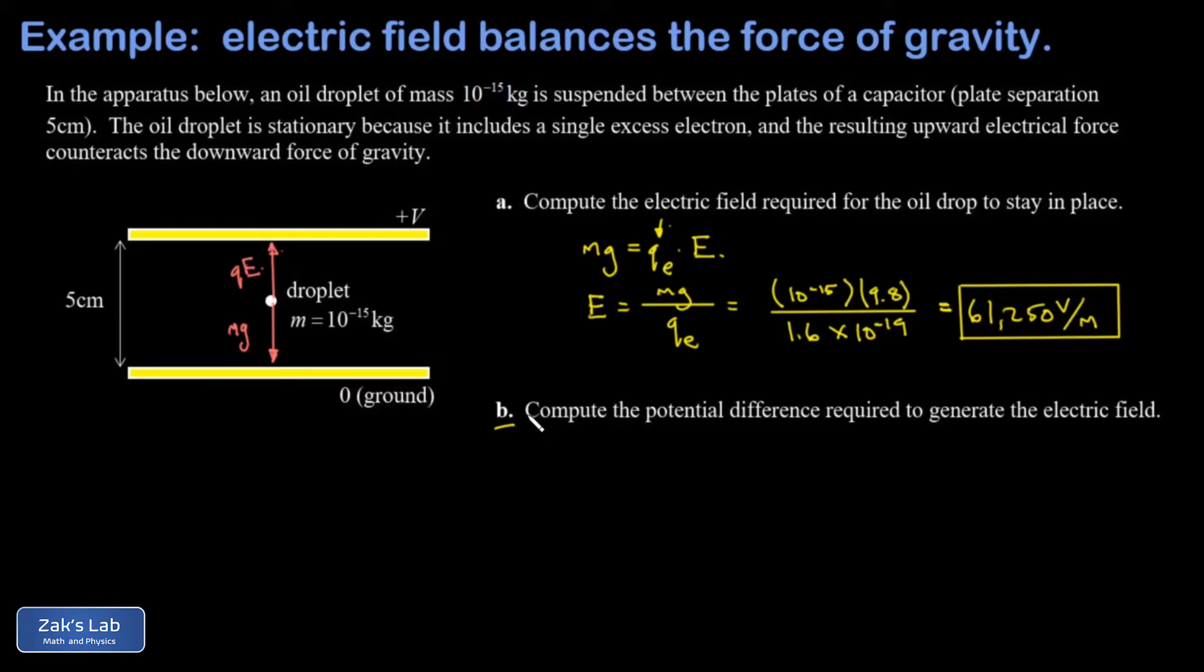So in part B, we want to get the potential difference required to generate this electric field. And we mark that as delta V in the diagram. Well, the electric field strength is determined by the potential difference you have, the number of volts, divided by the distance you spread that potential difference over. In other words, this five centimeter plate separation. As a formula, it looks like this. E is equal to V over D.